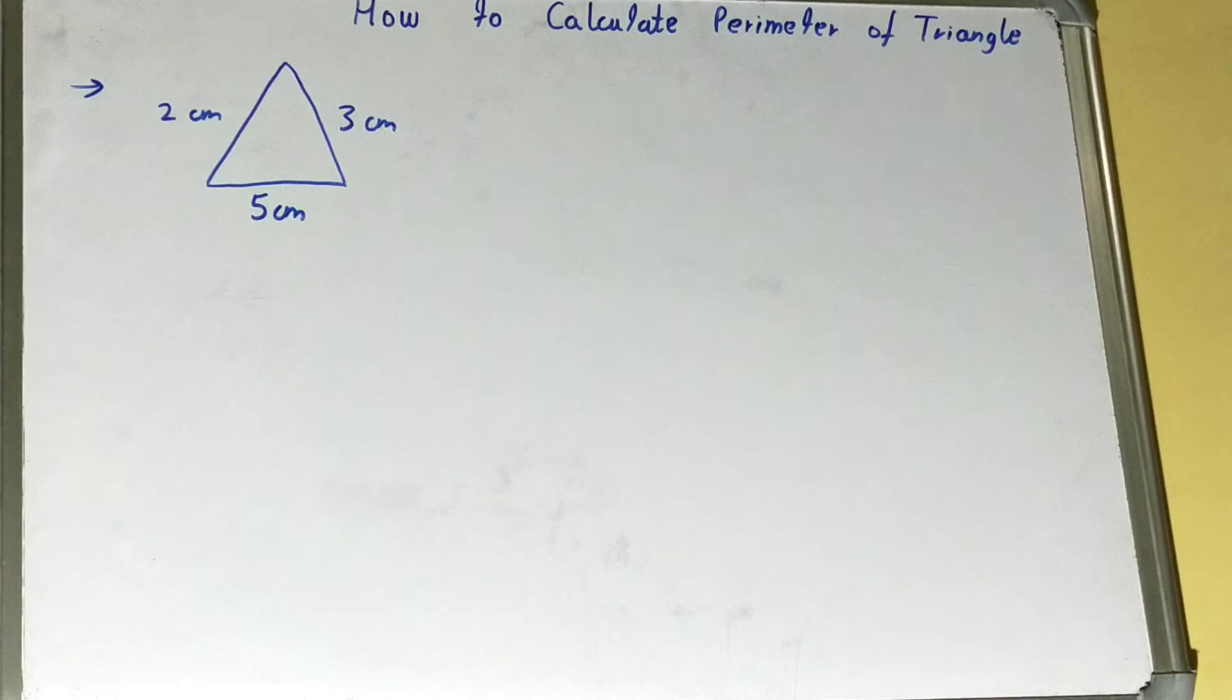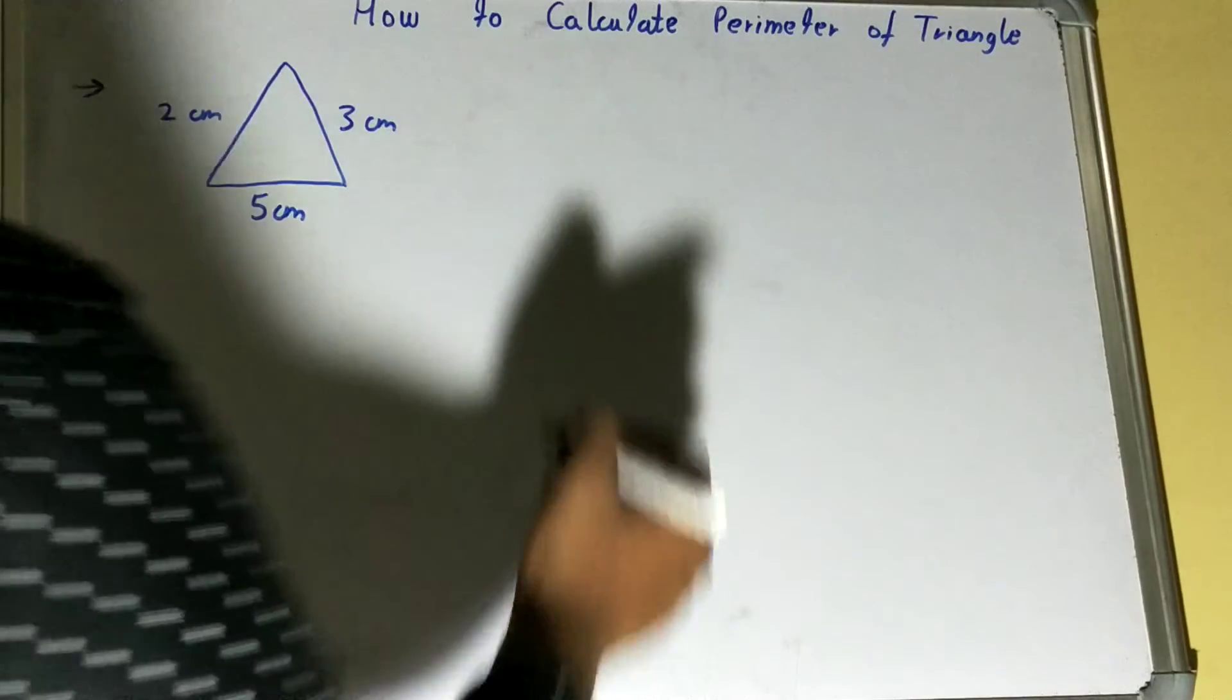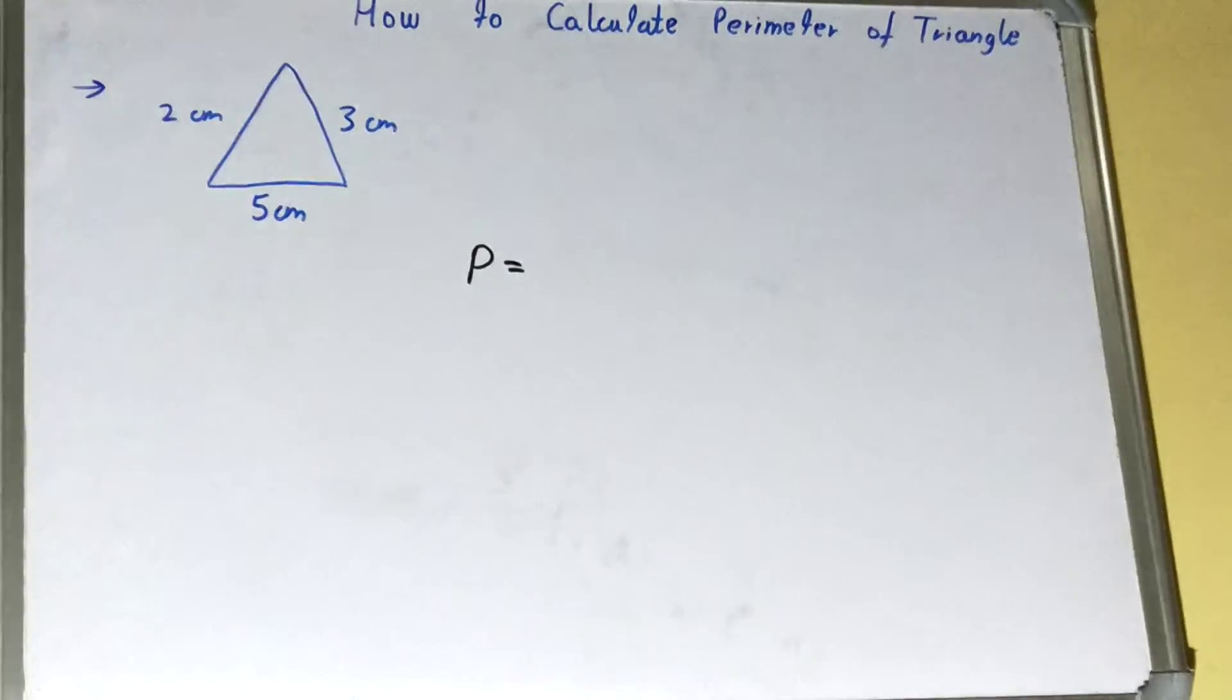The principle or the way of calculating the perimeter of a triangle remains the same. Perimeter is basically addition of all the sides of a triangle. It doesn't matter if two sides are the same or three sides are the same, you need to pick all sides one by one and add them up.